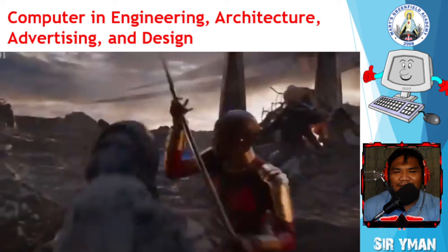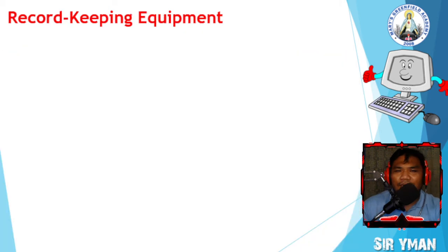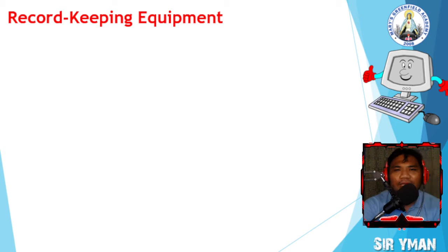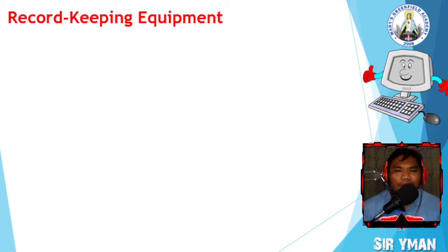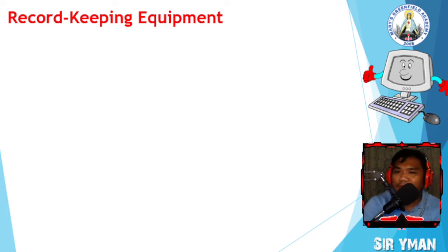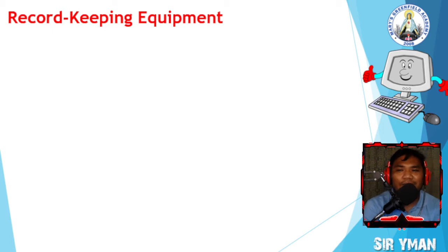Another use of computer is in record keeping equipment. Have you seen an actual library? A library can be a whole building or just a room containing collections of books, periodicals, and sometimes films and recorded music for people to read, borrow, or refer to. Since 1990, libraries kept their records of collections in wooden cabinets — card catalogs containing cards with bibliographical information. The more books in the library, the more card catalogs.